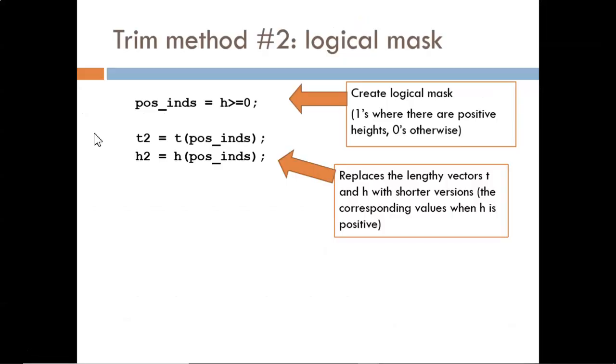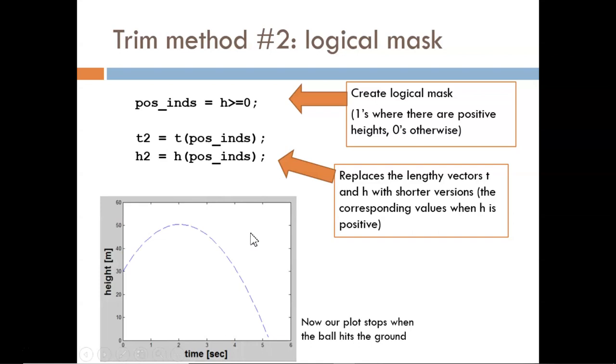A more flexible approach is to use the logical mask. Here my mask is named POSINS and holds true values at indices where height is above zero. Then I use the mask to extract the corresponding values from the original time and height vectors. It's obvious why I extract only the positive h values, but why t? Because in order to make a plot, the two input vectors must be the same length. This method assures that we have a consistent set of ordered pairs to plot.